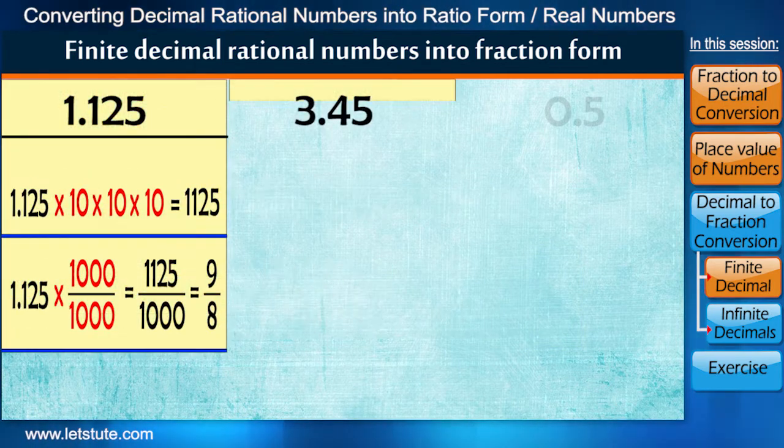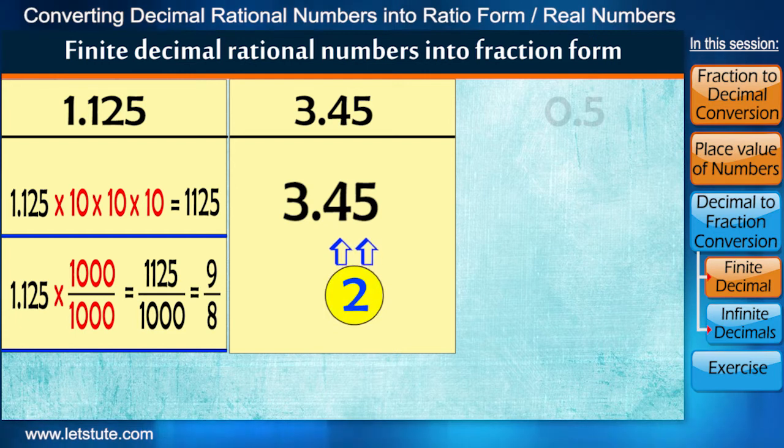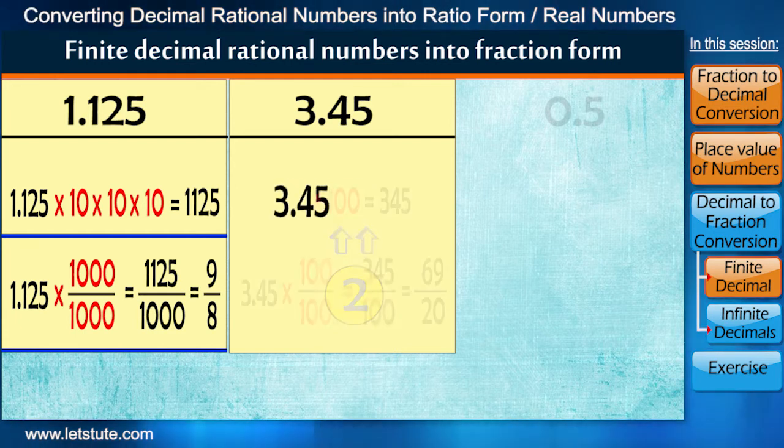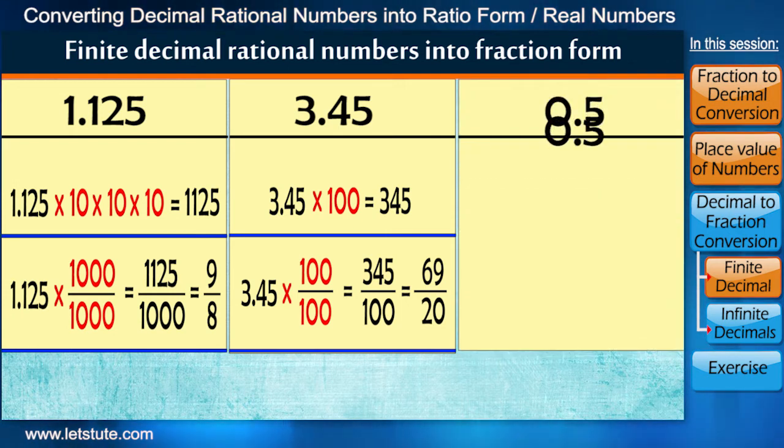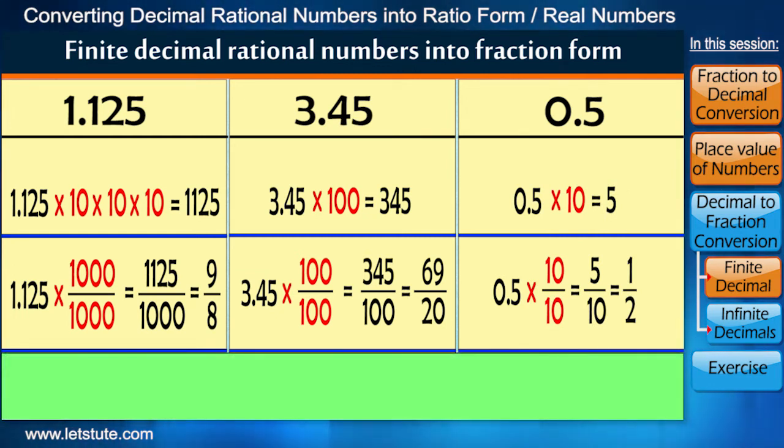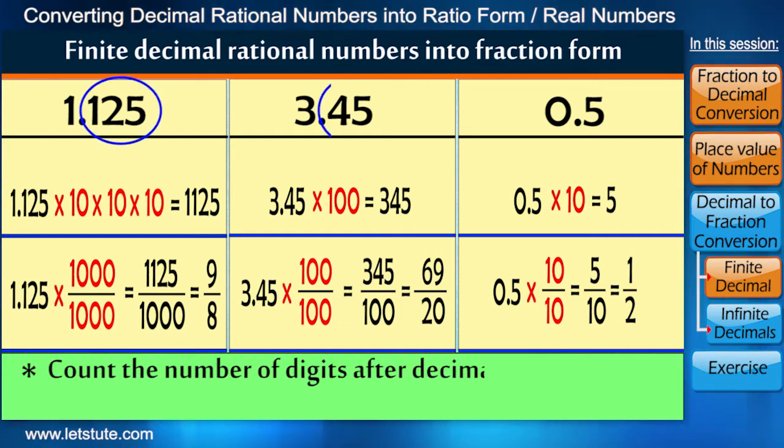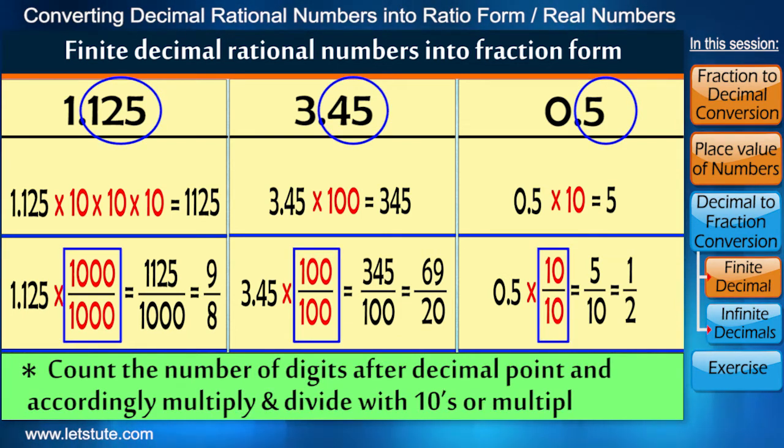The very same way, in the number 3.45, we have two digits after decimal point, so we multiply and divide by 100. In 0.5, we have only one digit after decimal point, so we multiply and divide by 10. So friends, please understand that we have to just count the number of digits after decimal point and accordingly multiply with tens or multiples of tens.